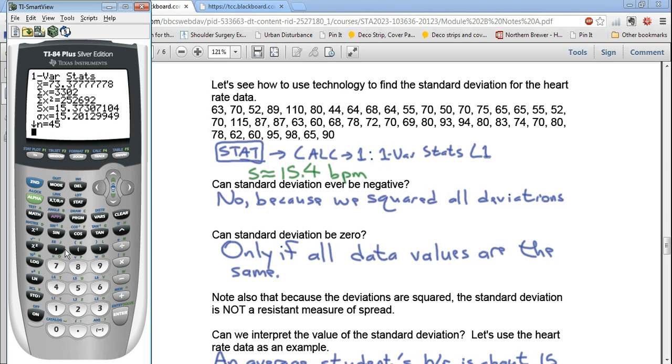And then you get a whole bunch of numbers on your calculator. So let's see what we have here. We have X bar. That's the mean. We have this capital, it looks like an E, but that's a capital Greek letter sigma. And sigma in math means the sum. So the sum of the X's is just if we took all of the heart rates, all these heart rates in the class, and added them together, we get 3,302. This means if we squared all of them and then added them together, we get 252,692. Now these two things are useful in certain situations, but we won't use them in our class.